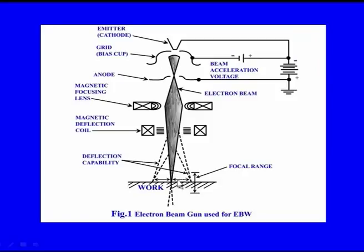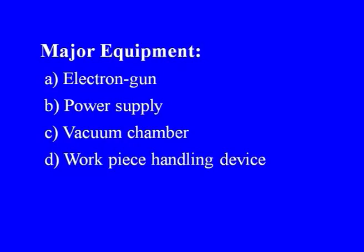Since this is a thermally-based process, some heat affected zone can be expected, but it can be minimized with proper control of the field parameters and the focal distance at which the work piece is kept with respect to the beam setup. The entire arrangement must be in a vacuum environment. The major equipment required consists of the electron gun, power supply unit, vacuum chamber, work piece handling device, and associated controls.